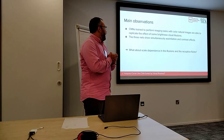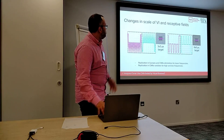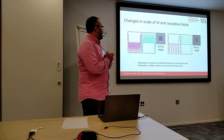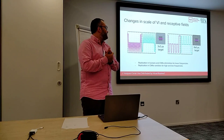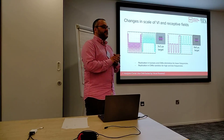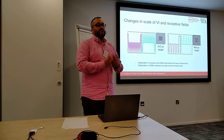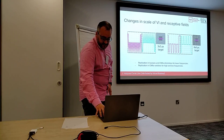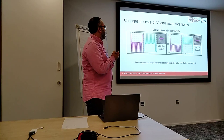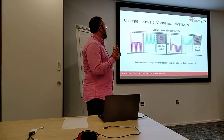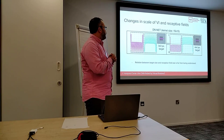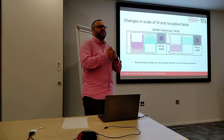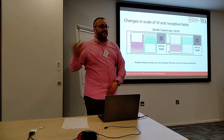The next question is: what happens if we change the scale and receptive fields of the visual illusions? When we change the scale, the replication in both humans and CNNs diminishes for lower frequencies. Importantly, in CNNs the replication vanishes for both high and low frequencies — if you go too far in either direction, the CNN can no longer replicate. Also, the relation between target size and effective receptive field size is far from understood; we were not able to obtain a clear relation between them.